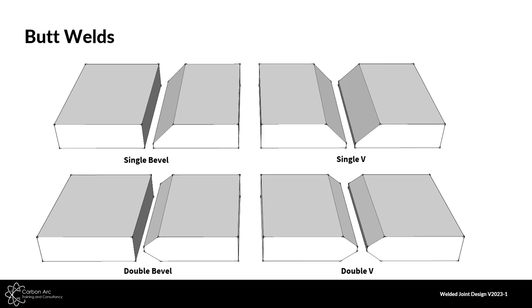As we go up in material thickness we can start to produce beveled edges. On the top left is a single bevel where we are only preparing one side of the material, and underneath that a double bevel — again one side has been prepped and the second base member coming in is unprepped. Very commonly we use a single V, where we prep both sides of the material to make that V shape, and we can also repeat that from the opposite side to produce a double V. These joint designs are probably the most standard ones we will see in production, covering fairly large ranges of material thicknesses.